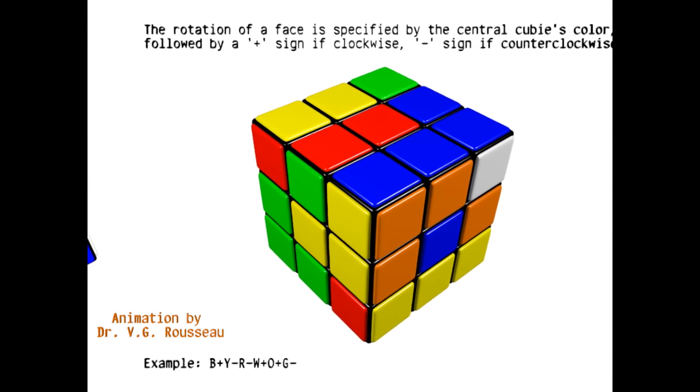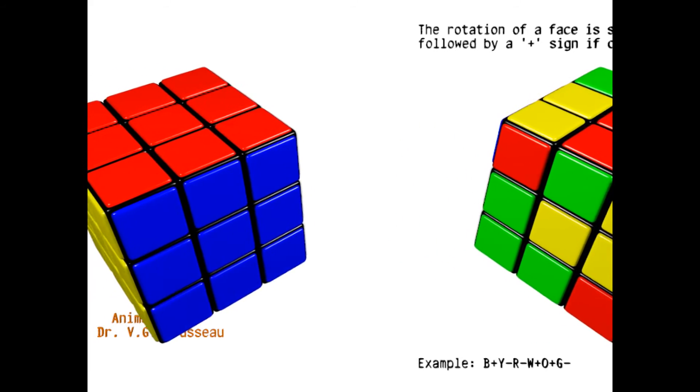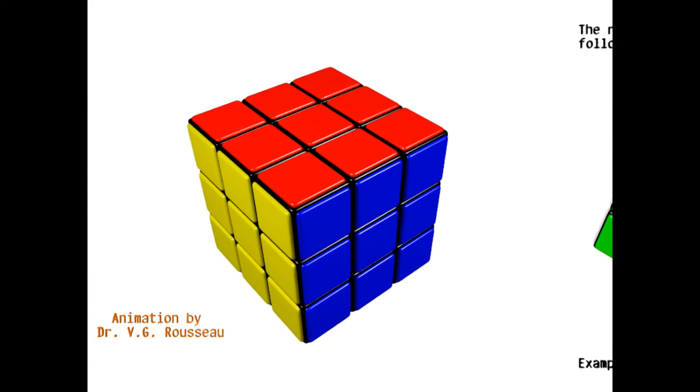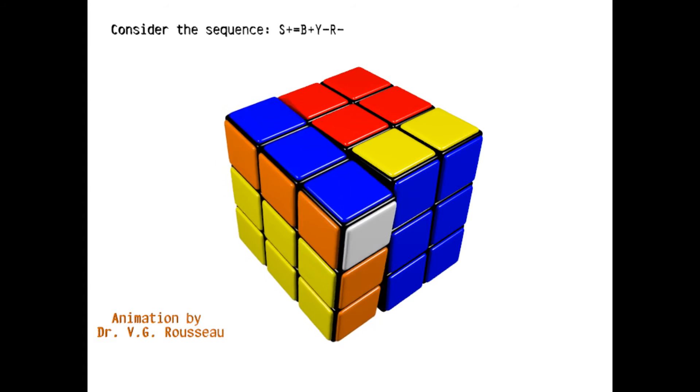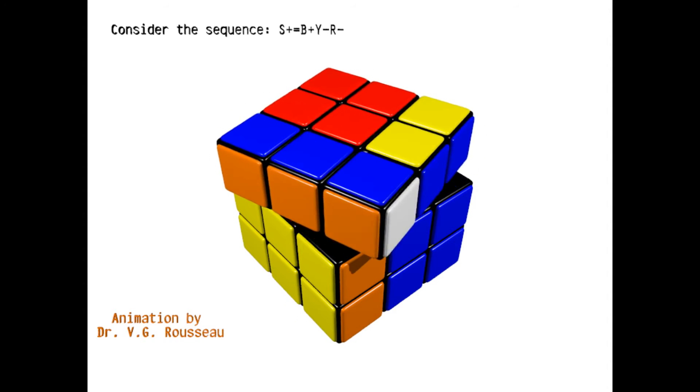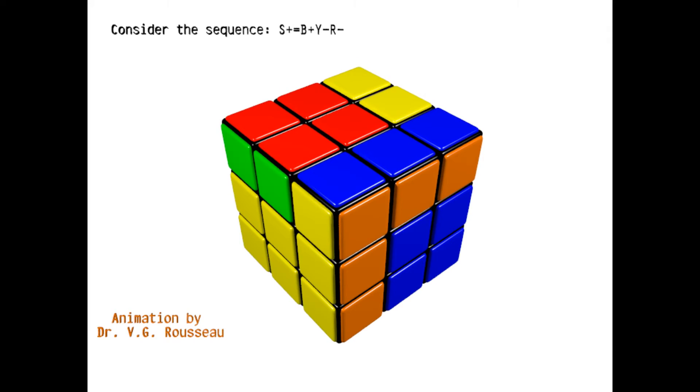Let us move back to a fully solved cube. A set of several successive rotations is what I call a sequence. Here is, for example, a sequence that I choose to call S+, and that consists of a rotation blue positive, followed by a rotation yellow negative, then followed by a rotation red negative. The positive sign that follows the name of the sequence S is meant to differentiate it from the corresponding inverse sequence, which I will call S-.